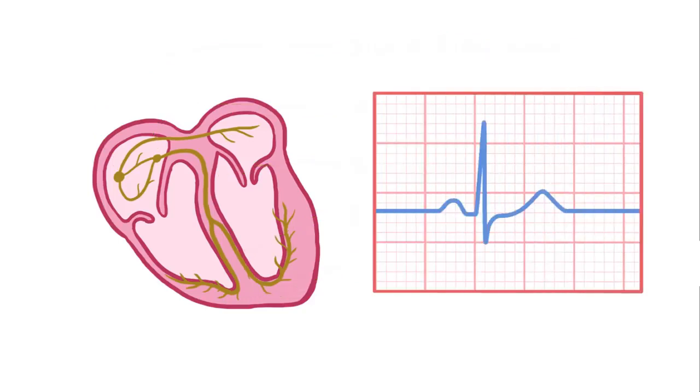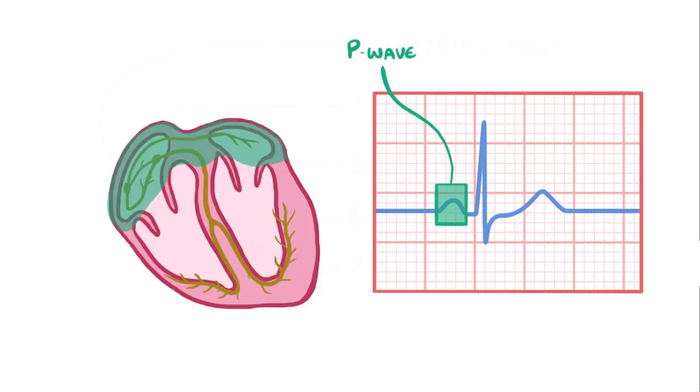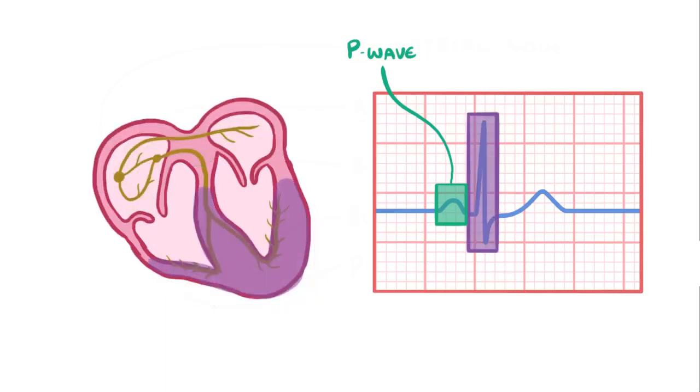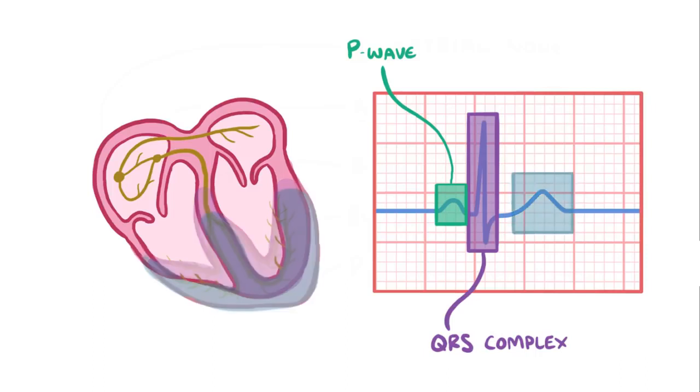On an ECG, the atrial depolarization and contraction is seen as a P wave, the ventricular depolarization and contraction is seen as a QRS complex, and the ventricular repolarization and therefore its relaxation is seen as a T wave.